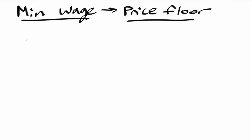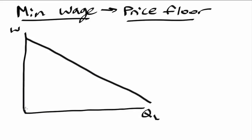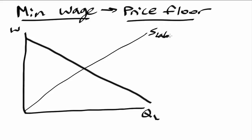So now let's think about it with respect to an actual graph. I'm going to draw my typical axes here. On the y-axis I'm going to put our wage, and on the x-axis I'm going to put labor — quantity of labor. When we think about demand and supply curves with respect to labor, this would be supply of labor, and then this would be demand of labor.